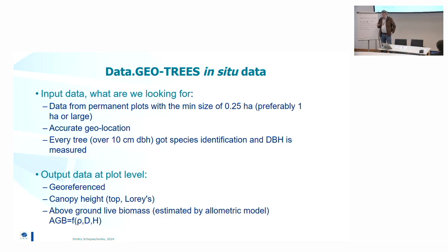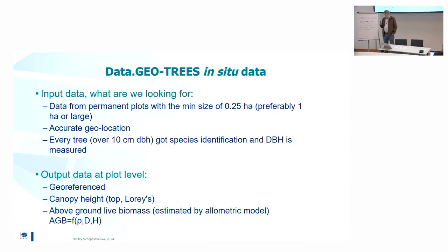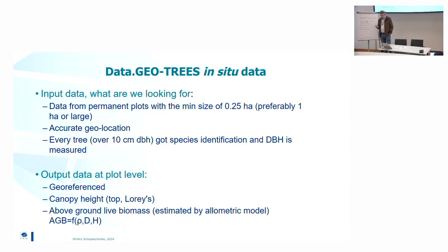If you have data, we can discuss how to host it here or how to get access to existing data. We look for permanent plots with a minimum size of a quarter hectare — 50×50 meters — but preferably at least one hectare. Accurate geolocation is required: we record coordinates of every corner multiple times. Every tree needs species identification, DBH, and in most cases height or at least a DBH-height relationship. The outputs available in our database are coordinates, canopy top height, average canopy height, and above-ground biomass.